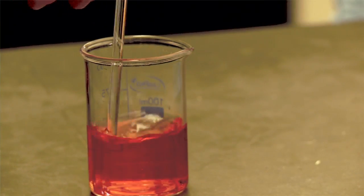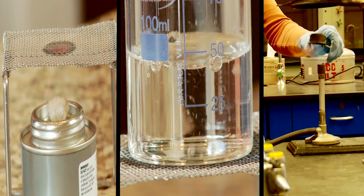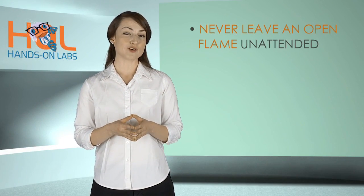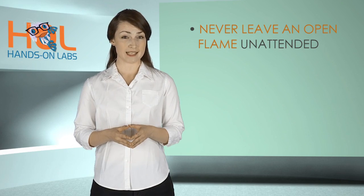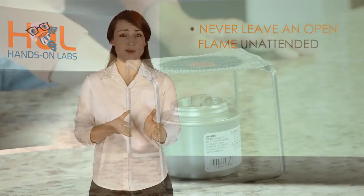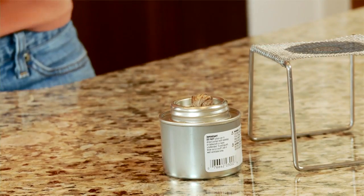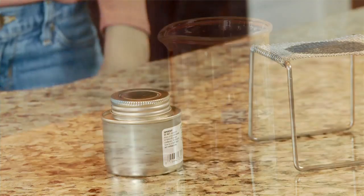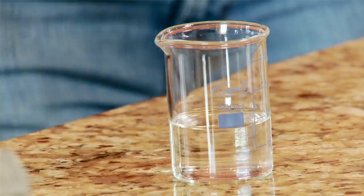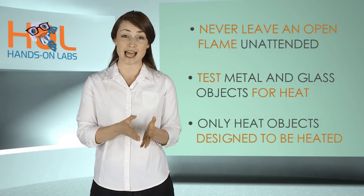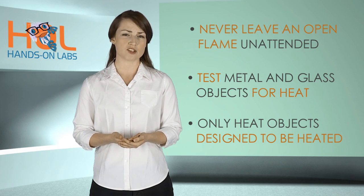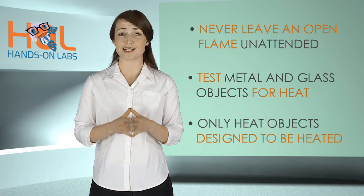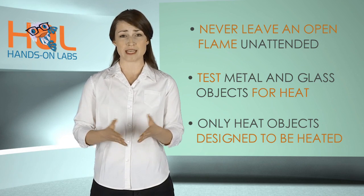In addition to caution with chemicals, remain aware of fire hazards. Open flames, heated objects, and burners can pose serious safety threats during your experiment. Here are some tips to keep in mind. Never leave an open flame unattended. It only takes seconds for loose clothing or other items to catch fire. Always extinguish heat sources when not in use. Test metal and glass objects for heat prior to handling in order to avoid burns and be careful to only heat objects that are designed to be heated. Certain glass objects such as graduated cylinders and flasks are not meant to be heated and could shatter if exposed to a heat source.